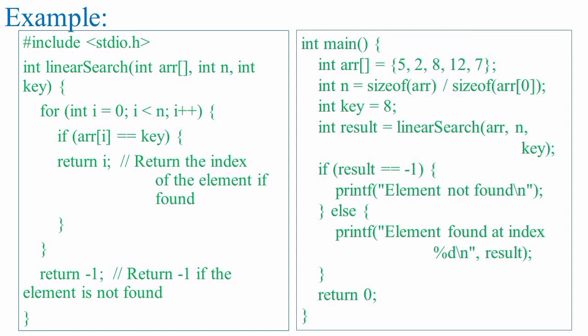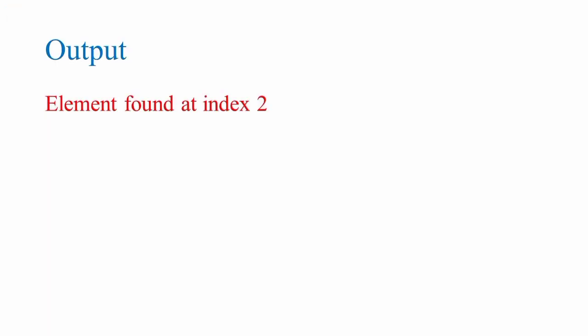In the given example, the output will be element found at index 2, since the key value 8 is found at index 2 in the array. If the key value was not present in the array, the output would be element not found.